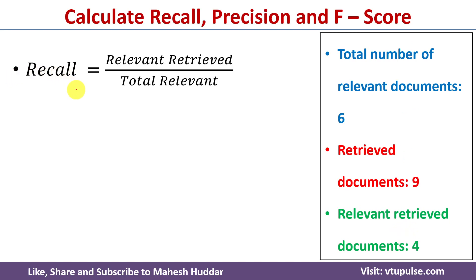To find the recall we use the following formula that is recall equals number of relevant retrieved documents divided by total relevant documents. Here relevant retrieved documents are 4, total relevant documents are 6, so recall equals 0.666.